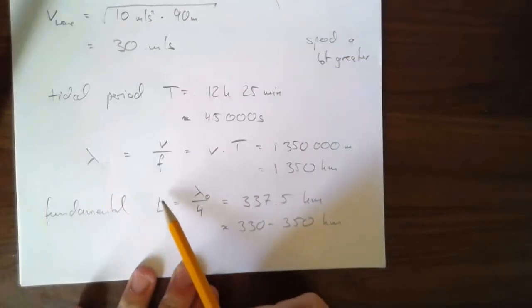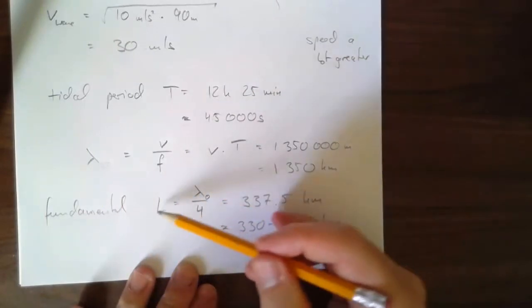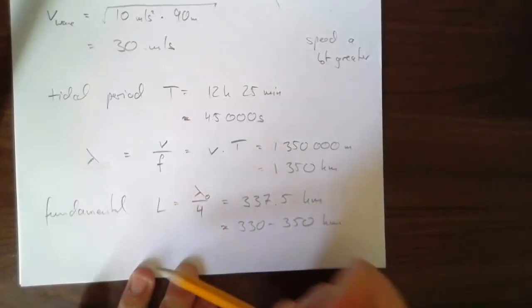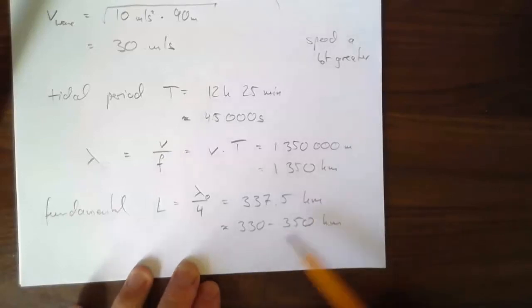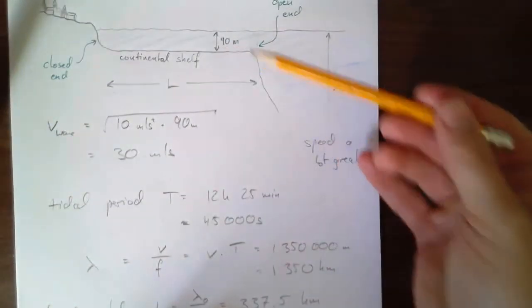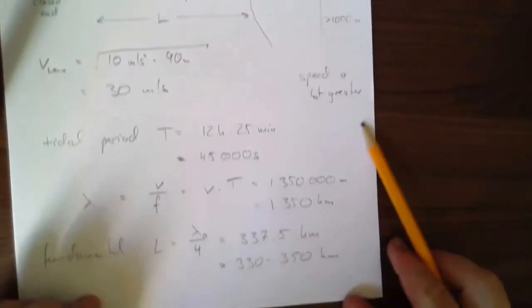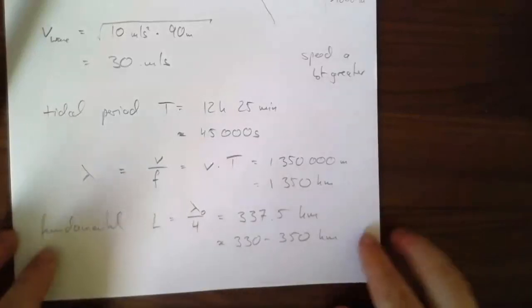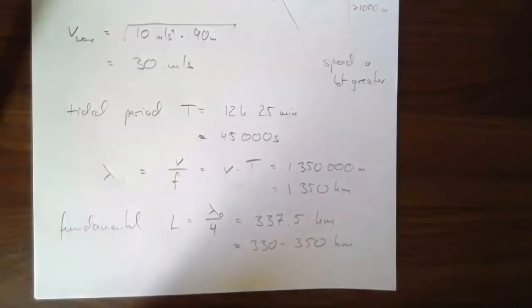The higher harmonics would require different values here, like 3 lambda over 4 and so on. Maybe that happens sometimes too. But it turns out that those values sort of match. They happen to just match. You get these effects in some places of the world. And if you're sitting there guilty of not knowing how tides actually form, or you've been told some story that's only a half-truth, which seems to be fairly common, then go look it up, and look it up properly. Thanks for watching.